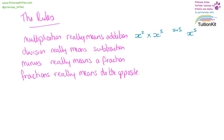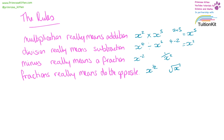Division really means subtraction. So if you have x to the four divided by x to the two, that really means four minus two, giving us x to the two. Minus really means a fraction, so x to the power of minus two is really one over x to the power of two. And fractions mean do the opposite — so x to the power of a half is the square root of x.